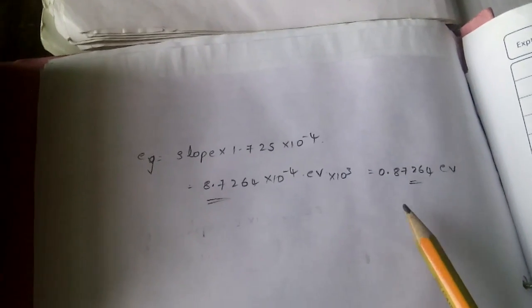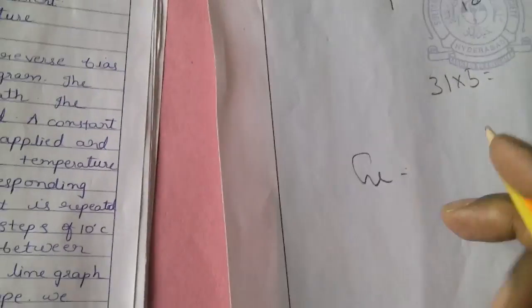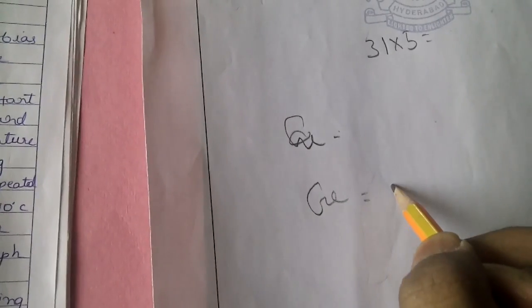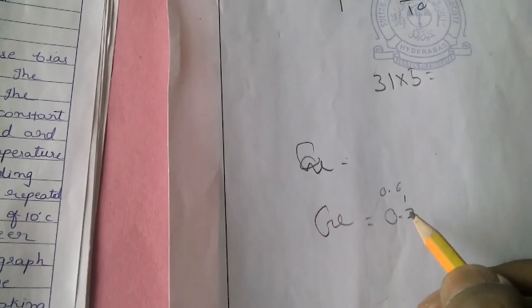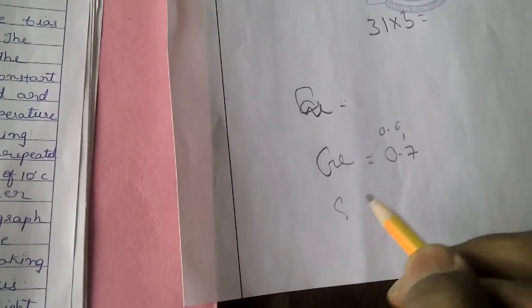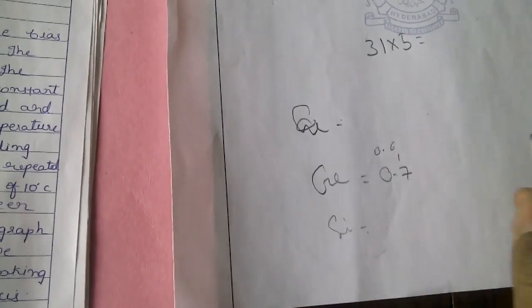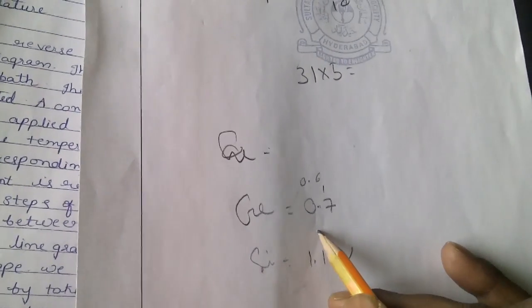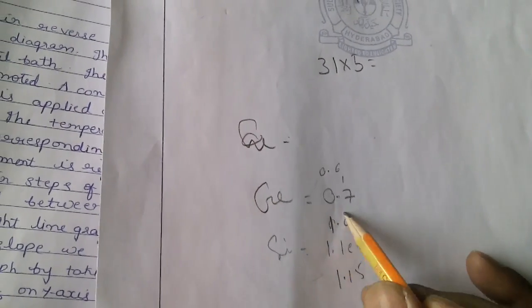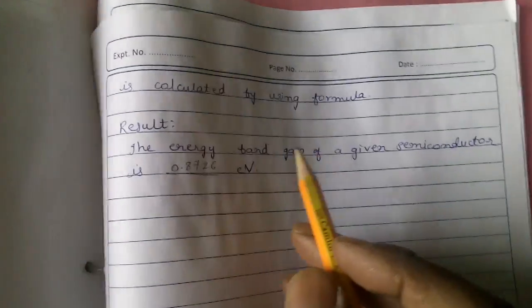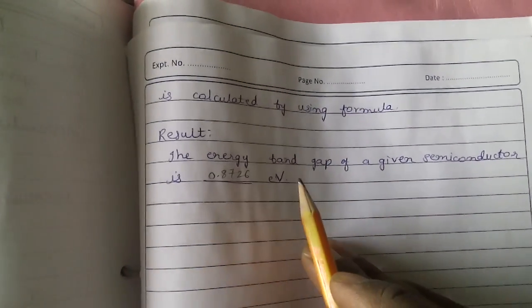Substituting the slope value into the formula, we get 0.8 electron volts. For germanium, the expected range is 0.6 to 0.7 eV. For silicon, the exact value is 1.1 eV, and the acceptable range is approximately 1.0 to 1.15 eV. The result to be written is: 'The energy gap of the given semiconductor is 0.7 electron volts.'